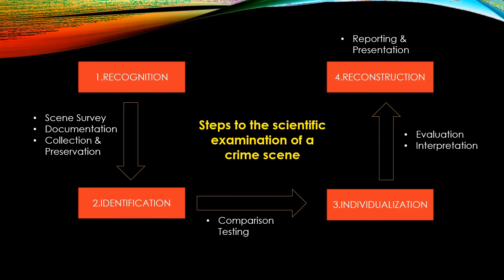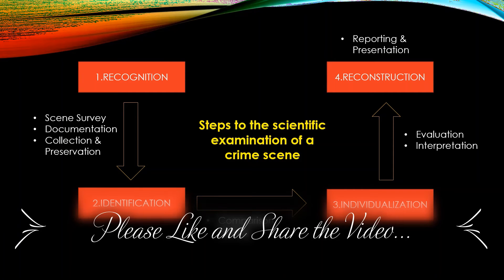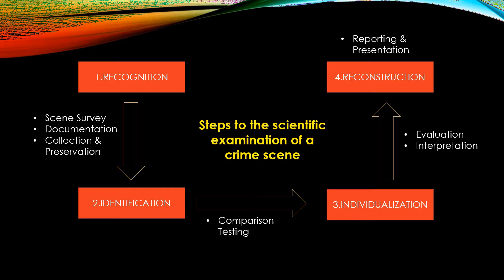Now we will look into the steps for the scientific examination of a crime scene. First is recognition, which includes scene survey, documentation, and the collection and preservation of evidence. Second is identification, which involves comparison testing of the evidence. Third is individualization, which includes evaluation and interpretation of the evidence. Fourth is reconstruction, reporting, and presentation of the crime scene and the crime.